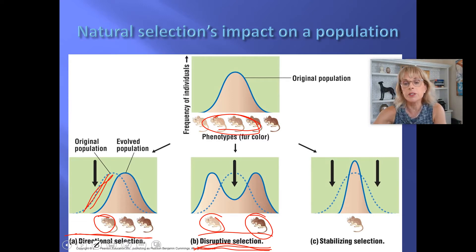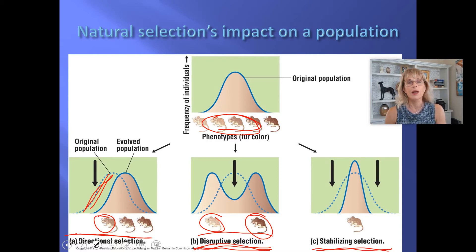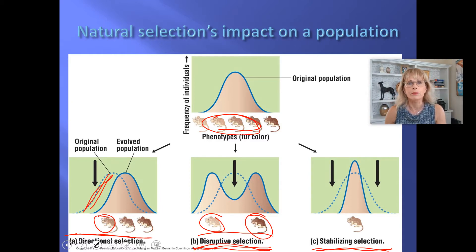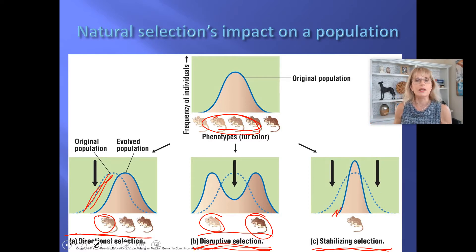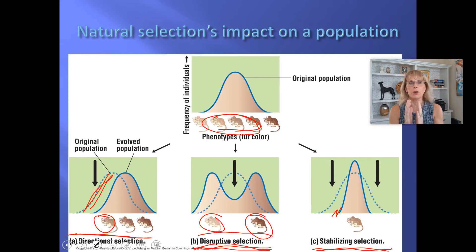And then we have stabilizing selection, which is actually very, very common. All squirrels look the same, right? The reason they all look the same is that when squirrels are even a little bit darker or even a little bit lighter, they are more likely to get killed off. So selection narrows things down to just a tiny, narrow range.